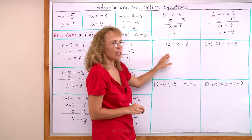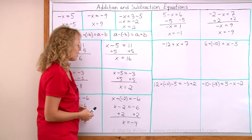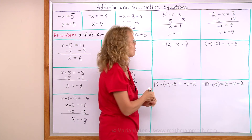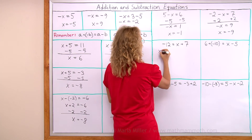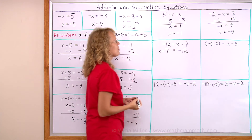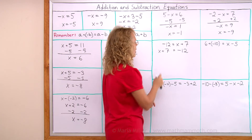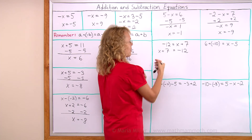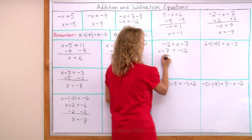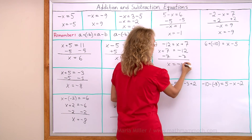Over here, x happens to be on the right side of the equation. You can just switch the right and left sides — it won't matter. I can write this as x plus 7 on this side and negative 12 on the other side. Now to get rid of this plus 7, I subtract 7 from both sides and get x equals negative 19.